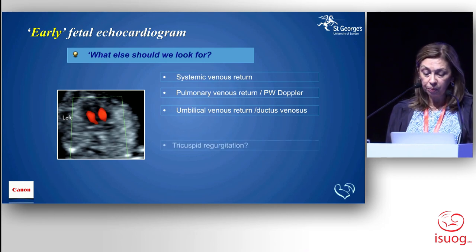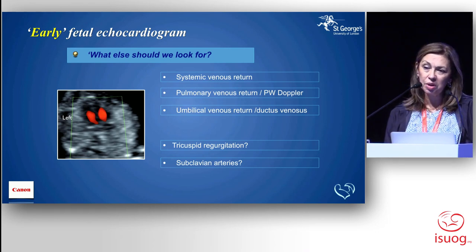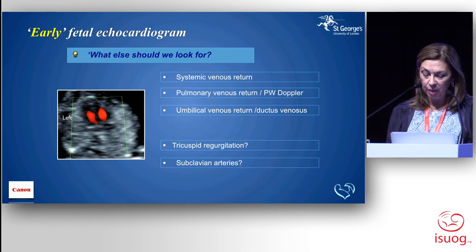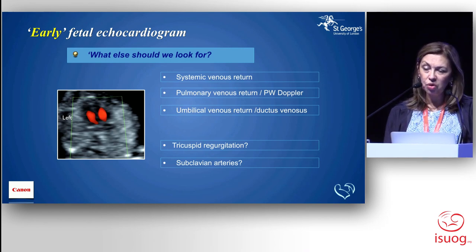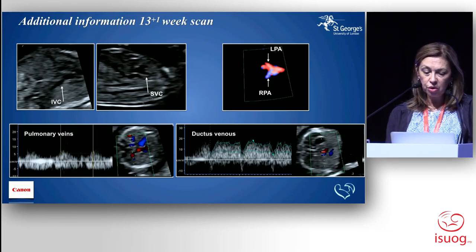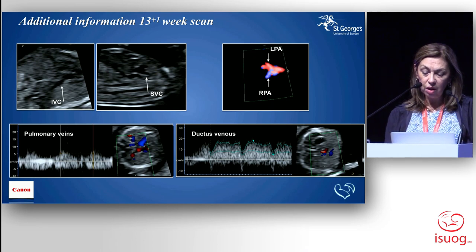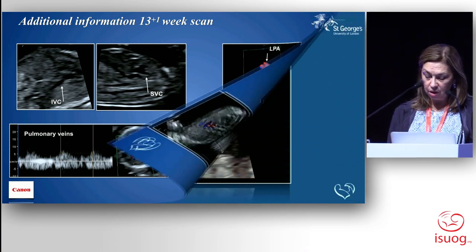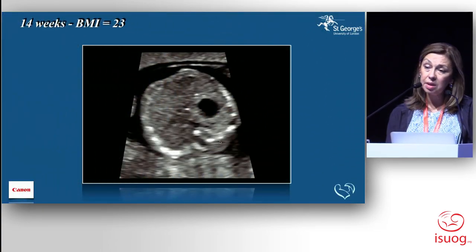There are things we don't always see but try to see, and that's changed because the equipment is getting better. More often than not we do see the superior and inferior vena cava, and pulmonary veins earlier in the pregnancy. These are desirable but not mandatory. Umbilical venous return is very easy to see. I put a question mark on what obstetricians are looking for — tricuspid regurgitation and subclavian arteries for chromosomal abnormality risk — but I'm more interested in whether the structure of the heart is normal.